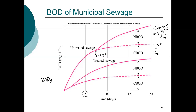Looking at BOD-5: it's about 7 days to switch from carbonaceous BOD oxidation to where we start oxidizing the nitrogen compounds. With treated sewage, it's actually much more rapid — about 2 days before you're seeing oxidation of the remaining organic nitrogen compounds and ammonia.